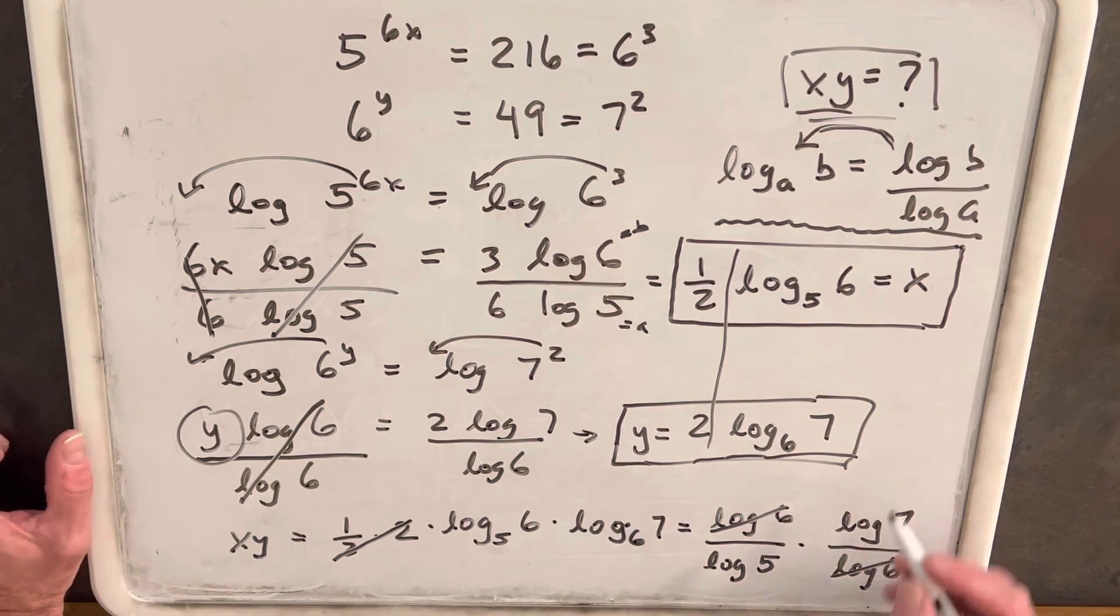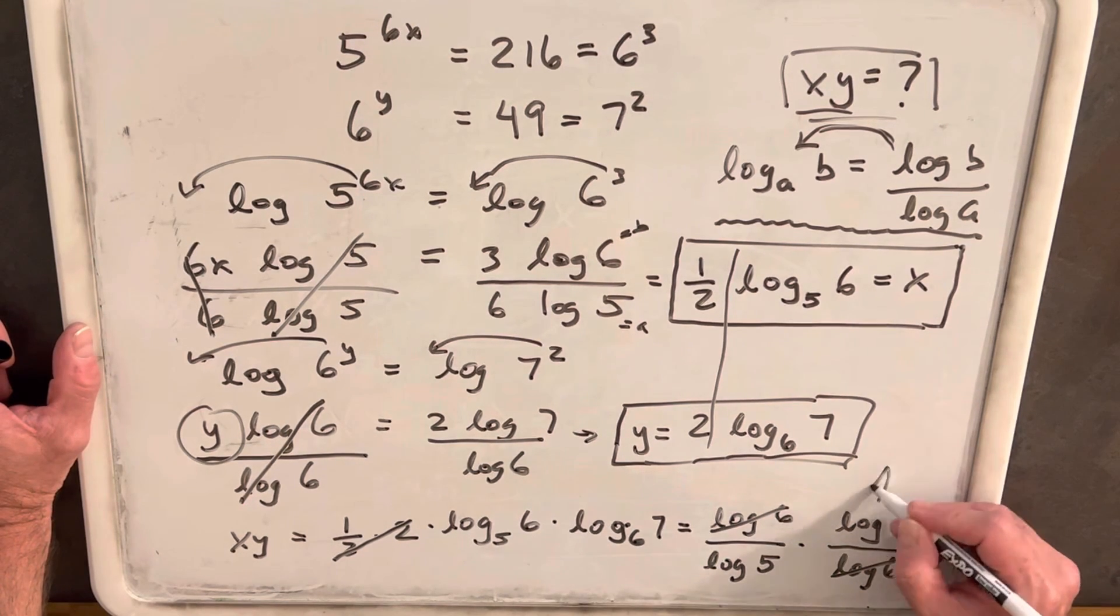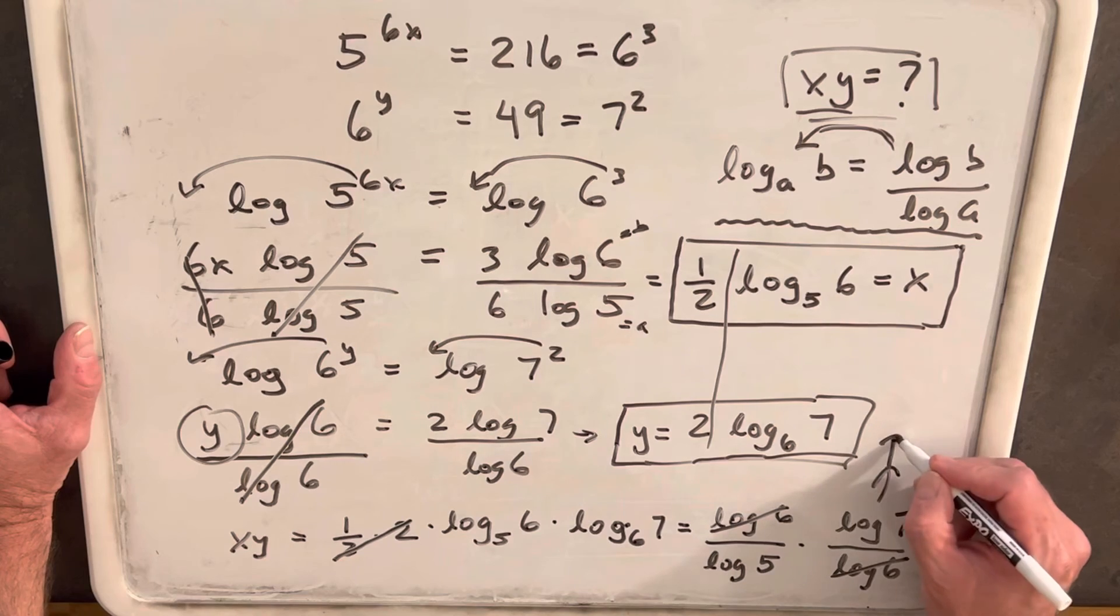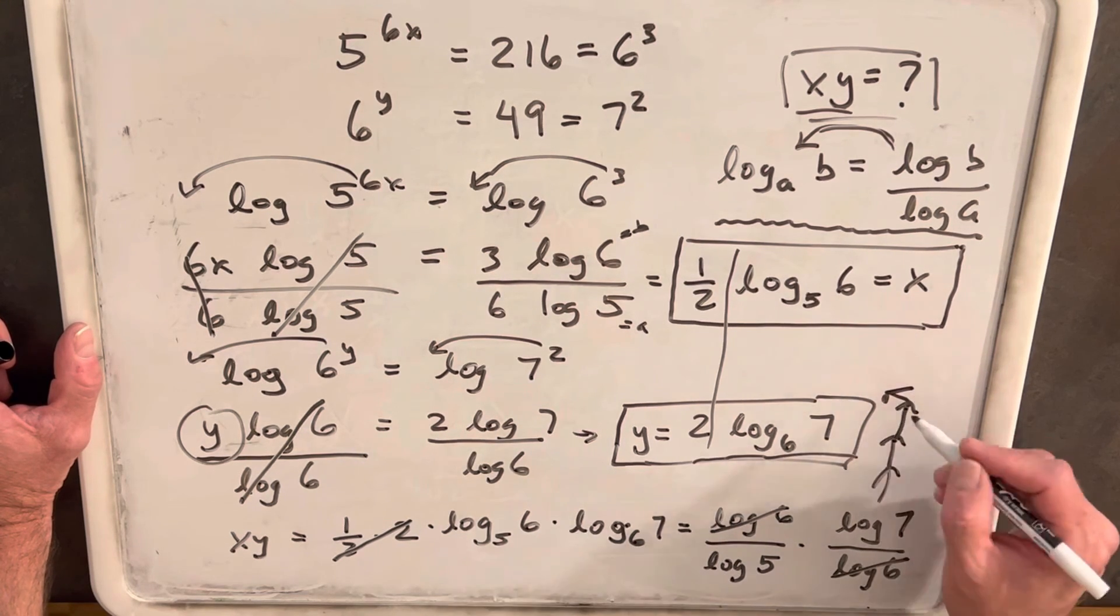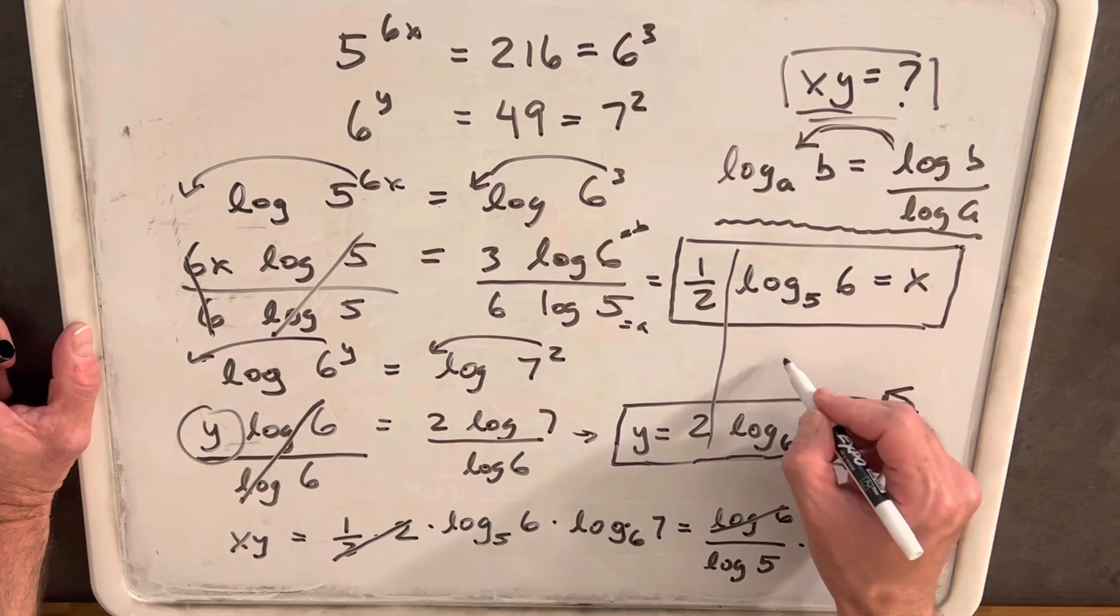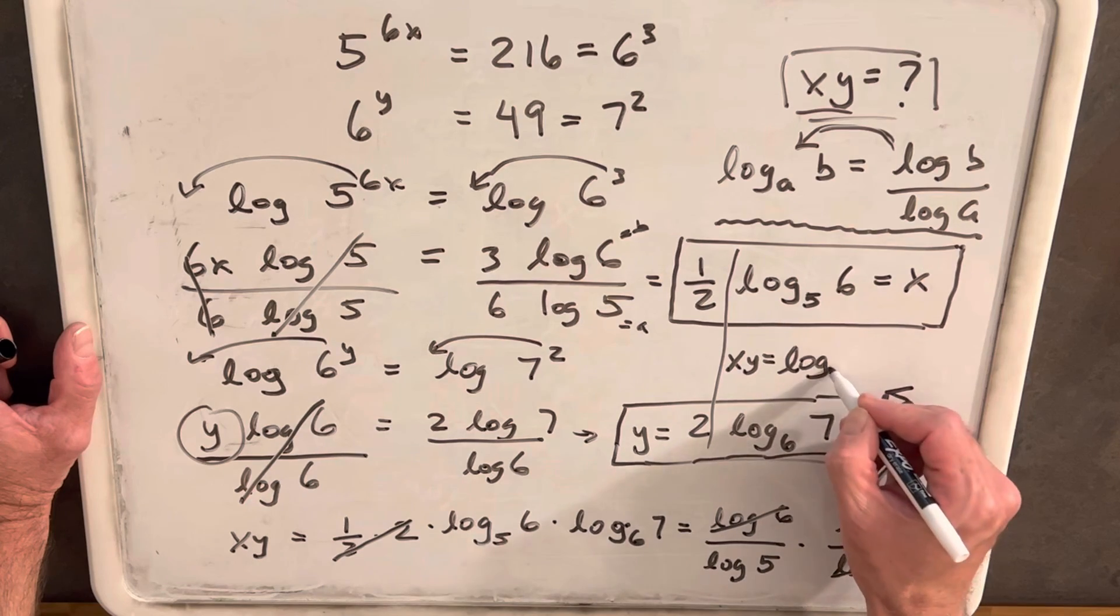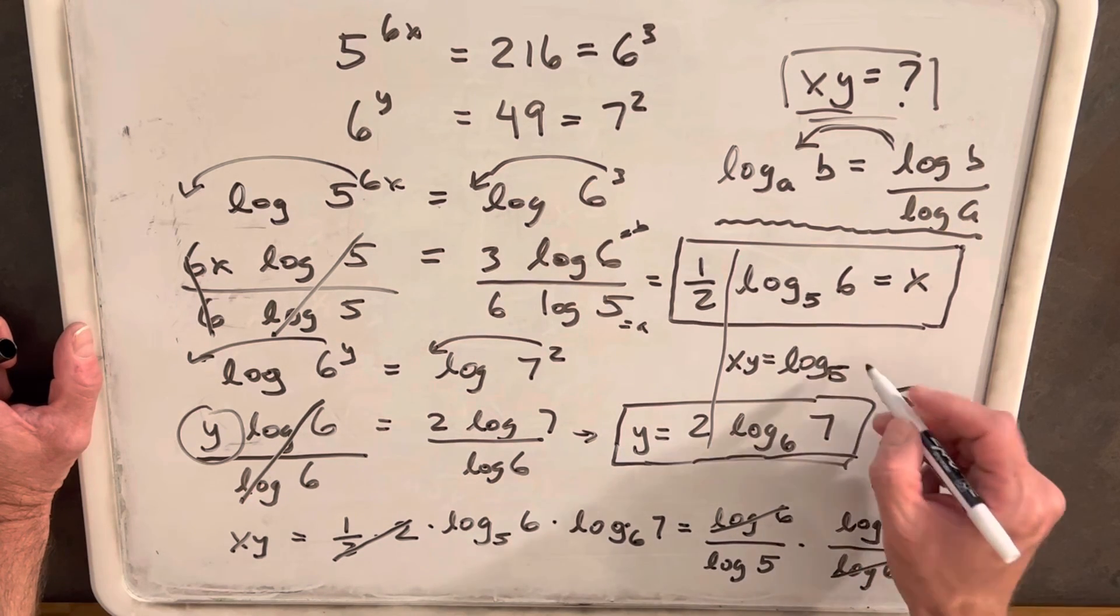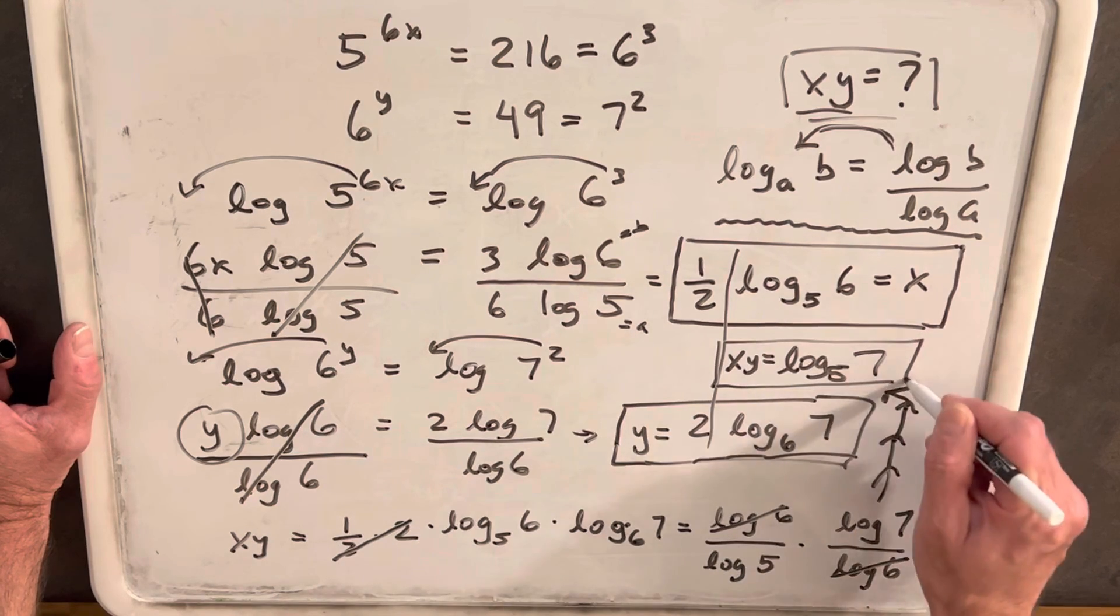But we can rewrite that again. Back to the change. This is kind of, this whole problem is an excuse to use the change of base formula. So, I could erase the board, but I'm just going to throw it in here. So our final answer for xy is log base 5, 7. And that's it.